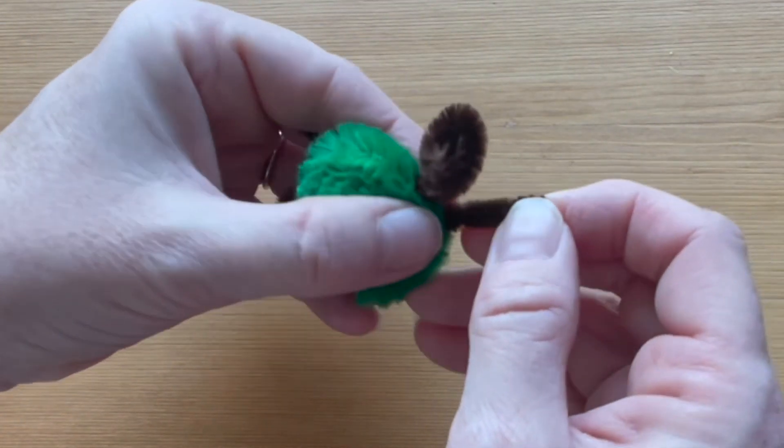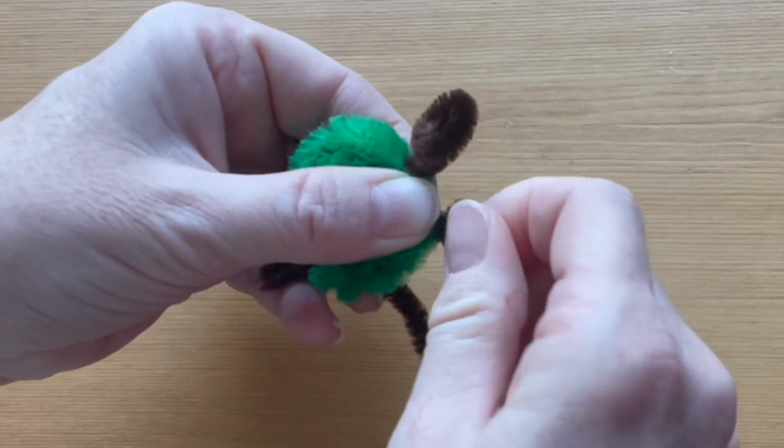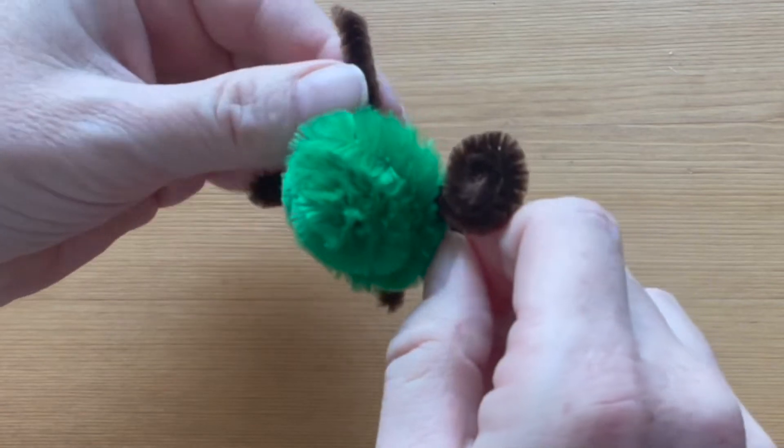Now twist each end down until it comes up to the shell. You'll be making the front and the back feet by doing this.